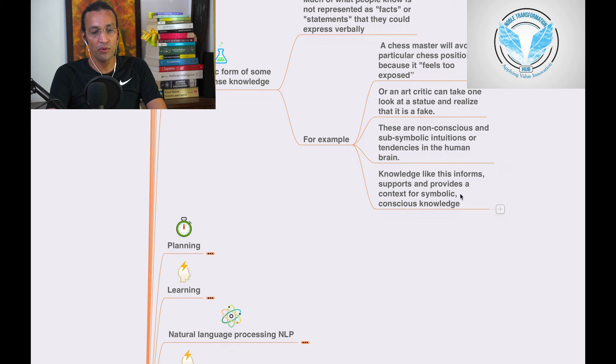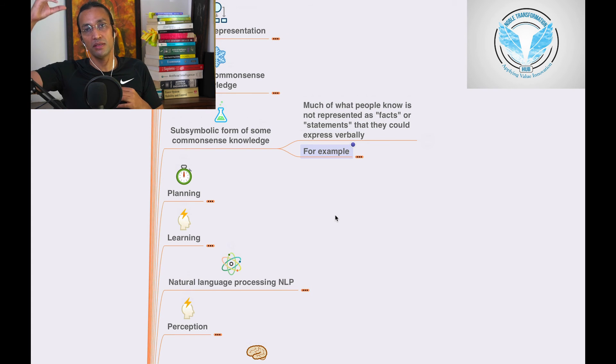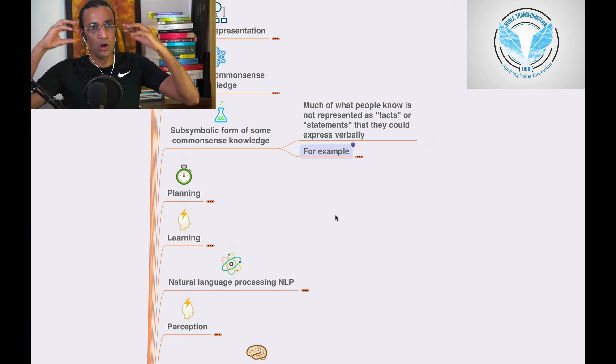Knowledge like that informs, supports and provides a contextual context for symbolic conscious knowledge. So this is called symbolic form of some common sense knowledge. Some, not fully. When we have doubts, we are not clear and all.